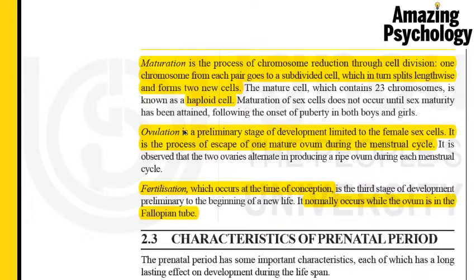The third step is fertilization — this is when the male sex cell and the female sex cell fuse together. Exactly 23 chromosomes come from the father and 23 from the mother. The mother provides the X chromosome, and the father provides either the X or Y chromosome, determining whether the child will be male or female. This fertilization usually happens while the egg cell is still in the fallopian tube, before it reaches the uterus.